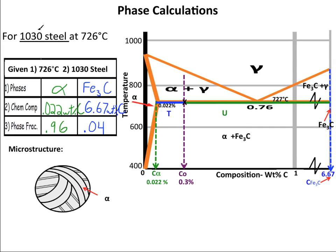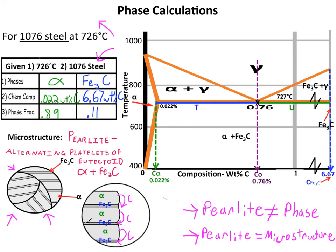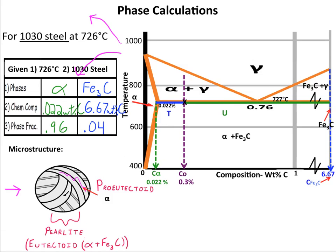Our next calculation is for the same hypo-eutectoid steel, but this time at one degree below the eutectoid temperature. Here are the calculations from the previous video. Now we need to figure out our microstructure. Remember in the previous slide we had that same pro-eutectoid alpha here, and now the gamma has turned into pearlite, following the same exact process — because gamma was at the eutectoid composition one degree above the eutectoid temperature. So we call this pro-eutectoid alpha and pearlite.